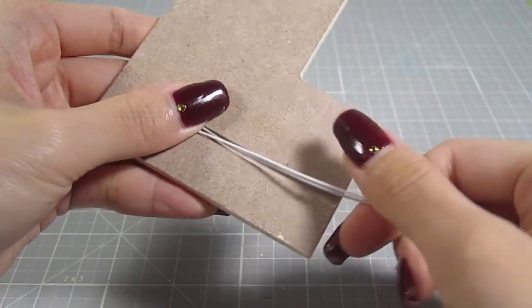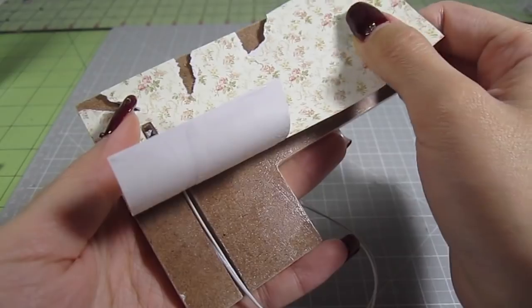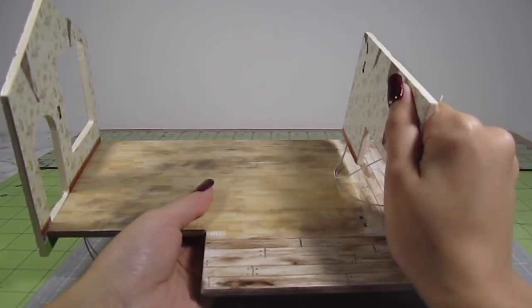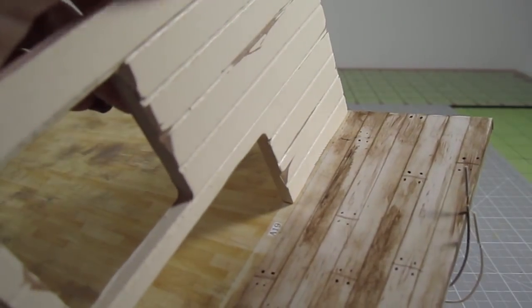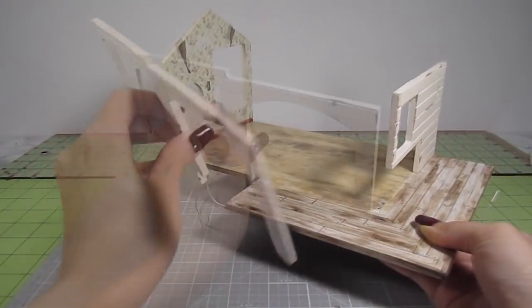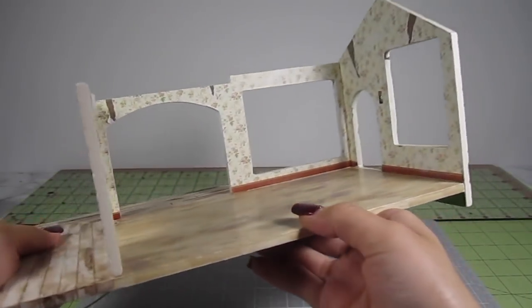Repeat the wallpaper and lighting process to the other walls. Add the L-shaped wall to the right side. Make sure to pull the bulb wires through the hole. Now I just add in the front wall. This house is really coming together.